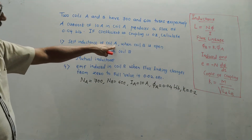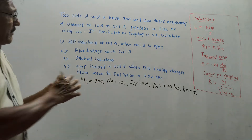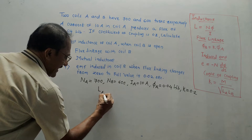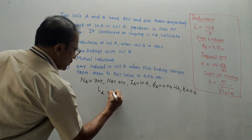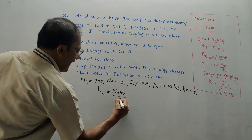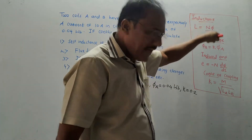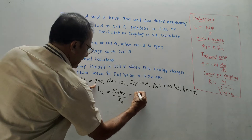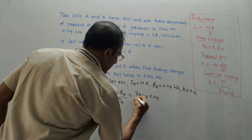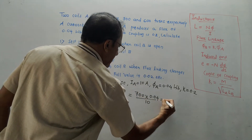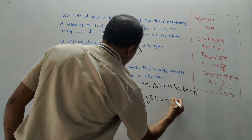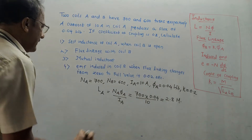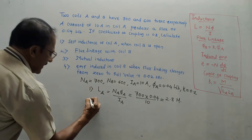Part 1: Self-inductance of coil A when coil B is open — as if only coil A exists. Using the formula: LA = NA × phi_A / IA. Substituting: NA = 700, phi_A = 0.04 Wb, IA = 10 A. So LA = 700 × 0.04 / 10 = 2.8 Henry. Since it is inductance, its unit is Henry. This is the answer to part 1.